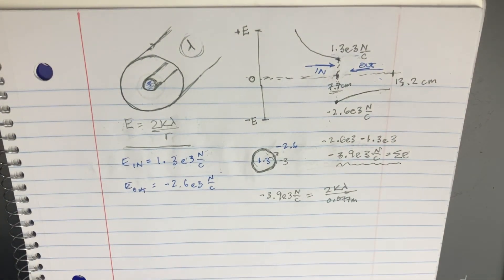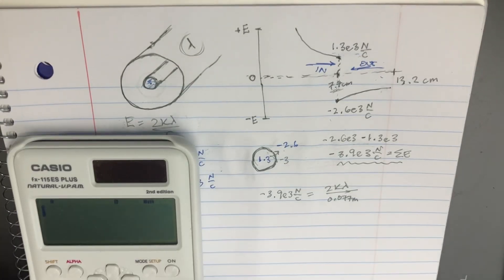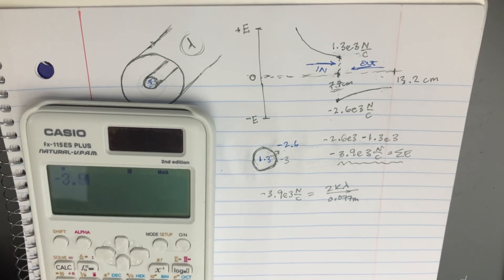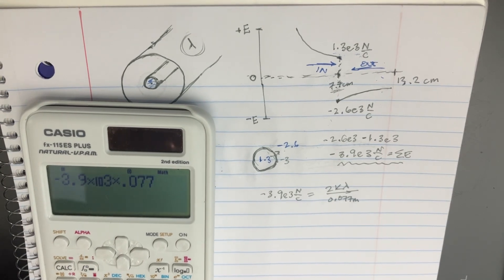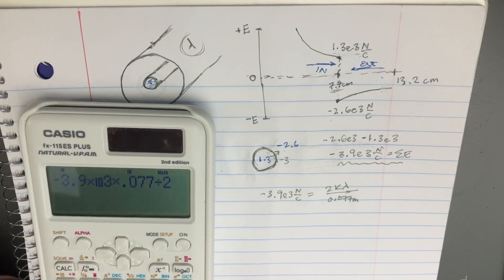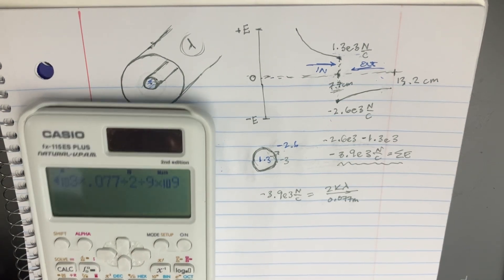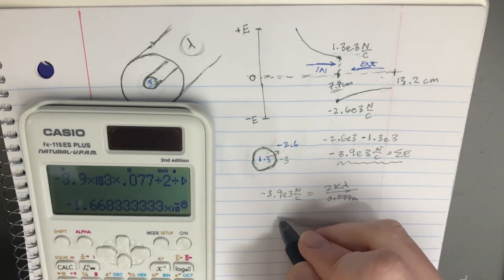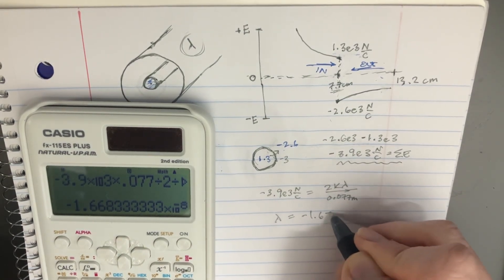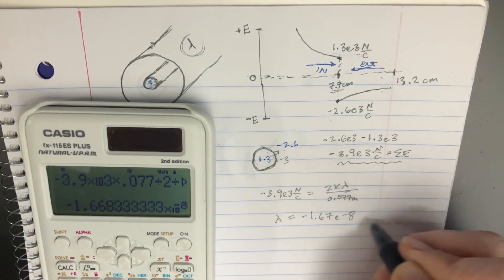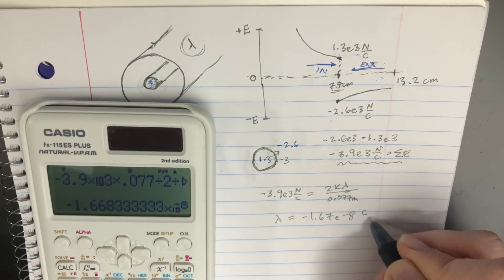And then we'll just multiply that out. Negative 3.9 e to the third times 0.077, and we're going to divide that by 2 and divide that by 9 e to the 9. And we should get our answer: lambda is equal to negative 1.67 e to the negative 8, and this is supposed to be coulombs over meters.